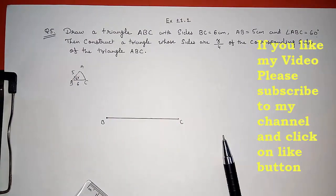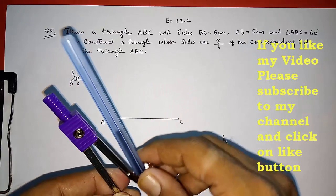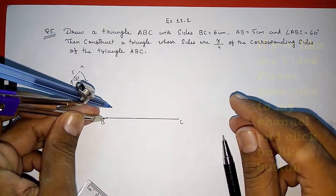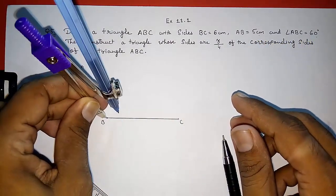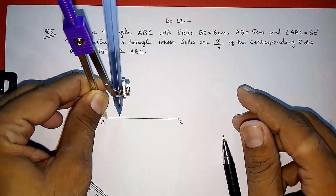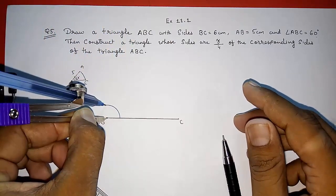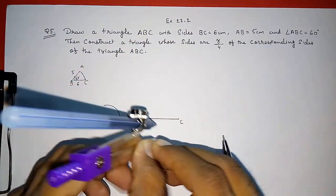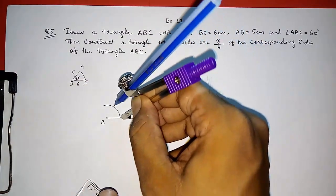Now they said angle B 60 degree. So I am going to draw a 60 degree without protractor. So you also don't have to use protractor. Directly you have to do by this method only. This will be our 60 degree.